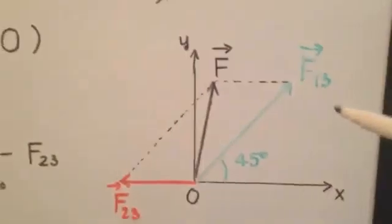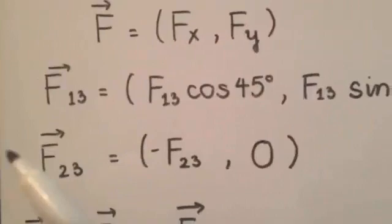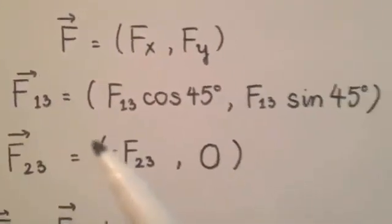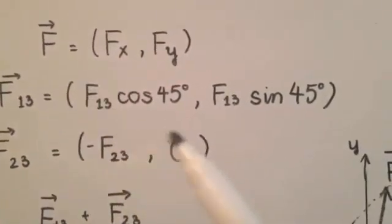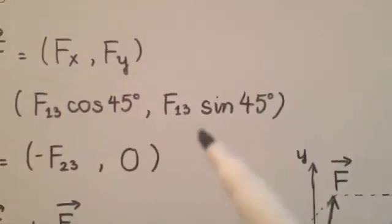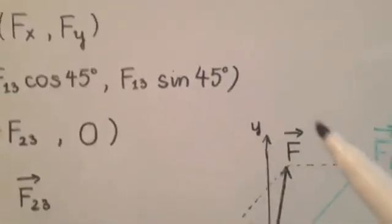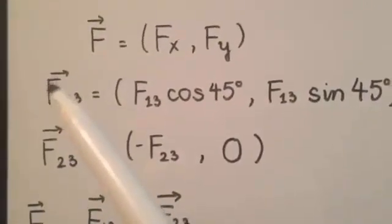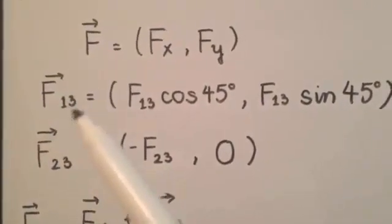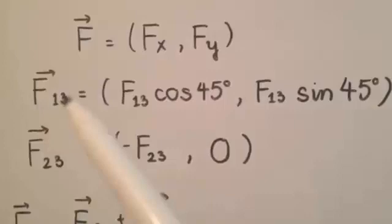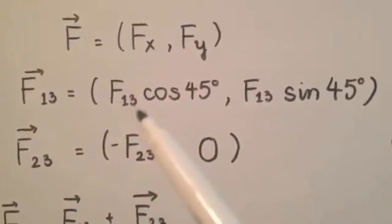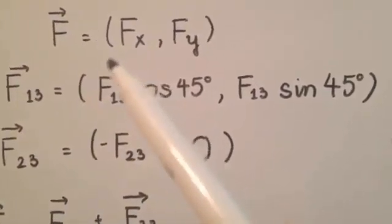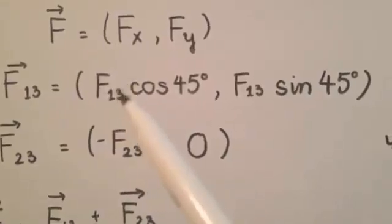And then, in that coordinate, we can find the components of F13: F13 cosine 45 and F13 sine 45. Remember, F13 with the vector sign is the vector, and F13 without an arrow on top means magnitude.